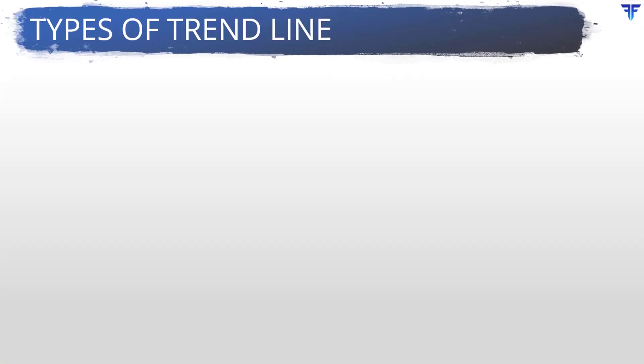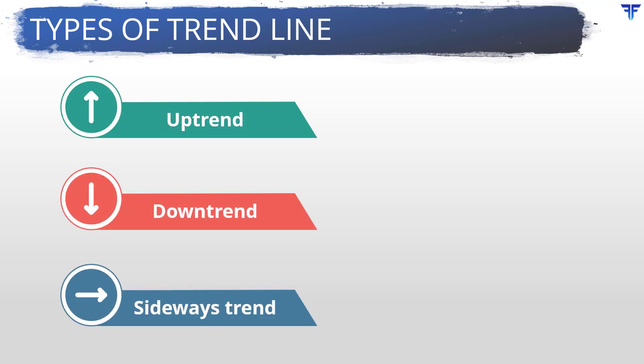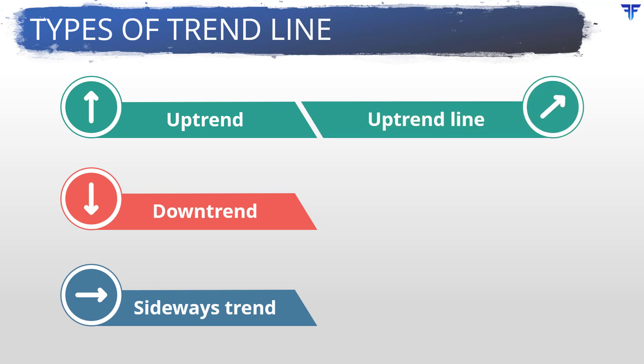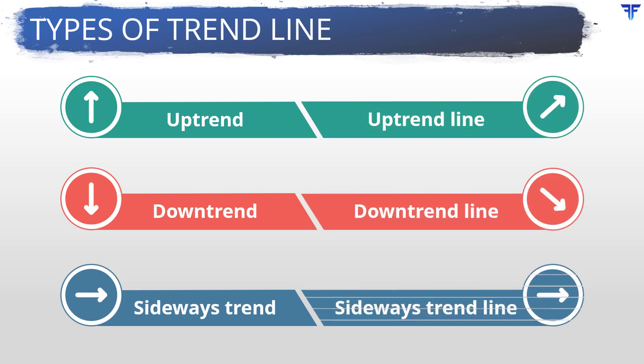In the previous video, when we spoke about the concept of trend, we said that there are three types of trends: up, down, and sideways. In a similar way, there are three types of trendlines: an upward sloping trendline, a downward sloping trendline, and a horizontal trendline.